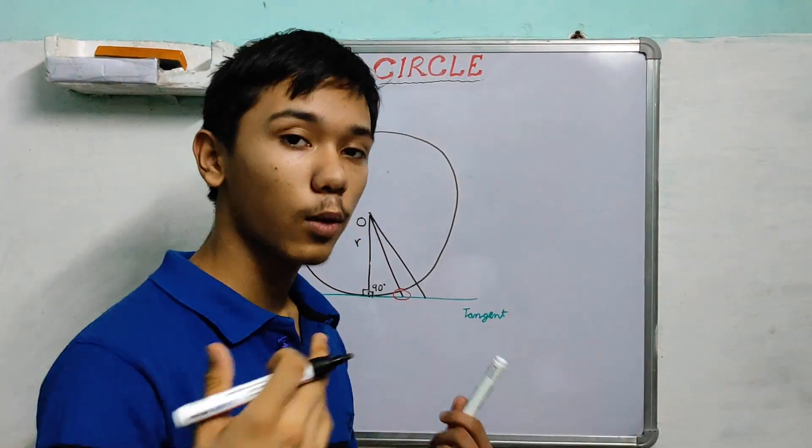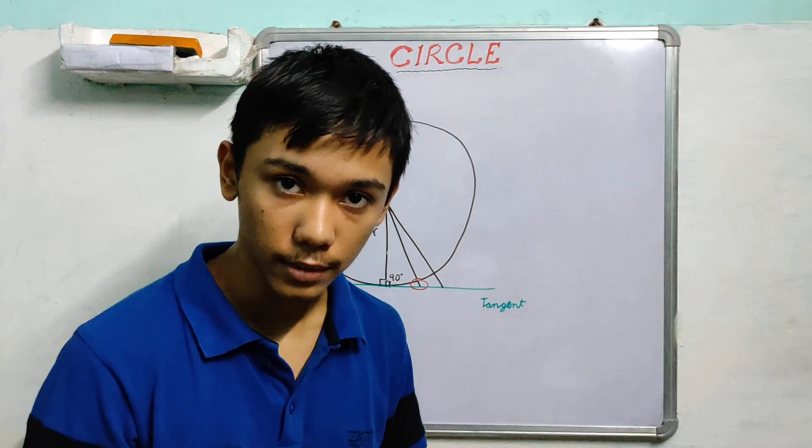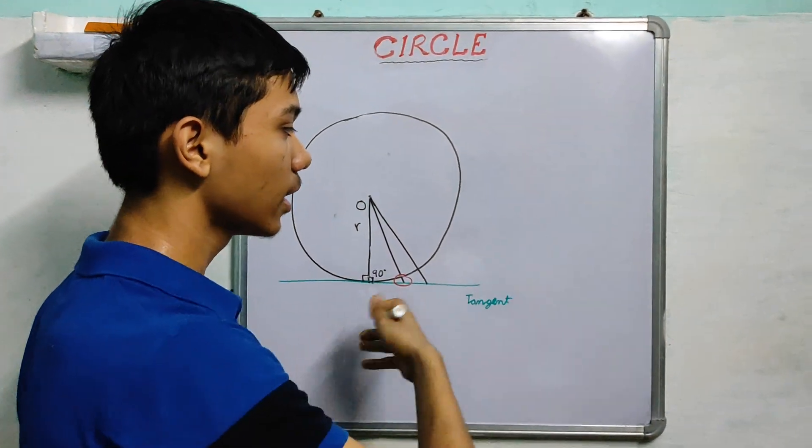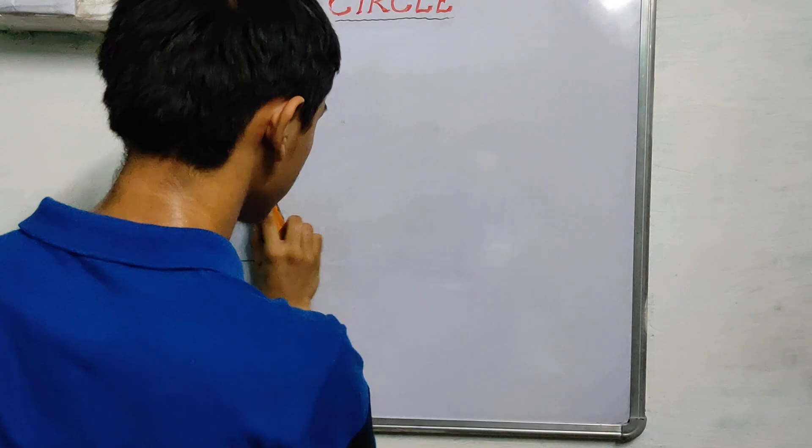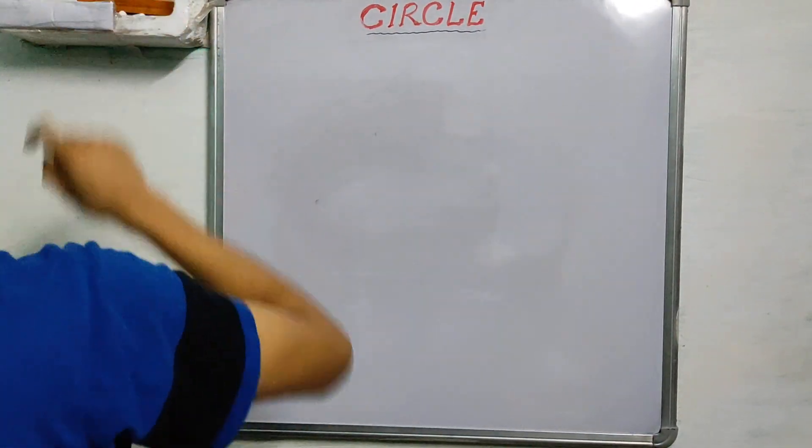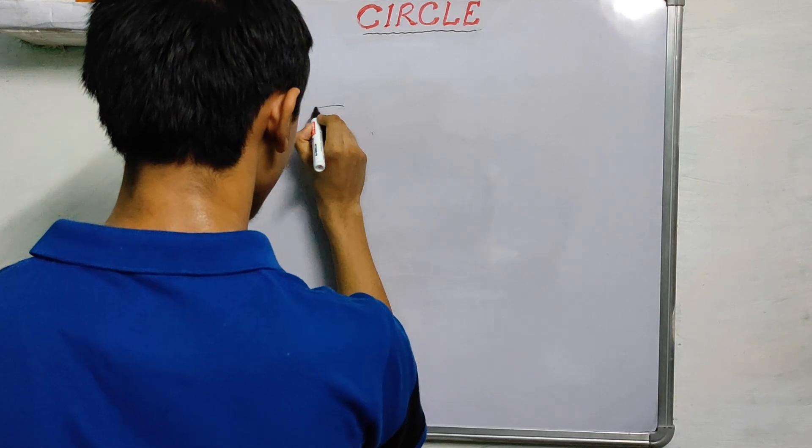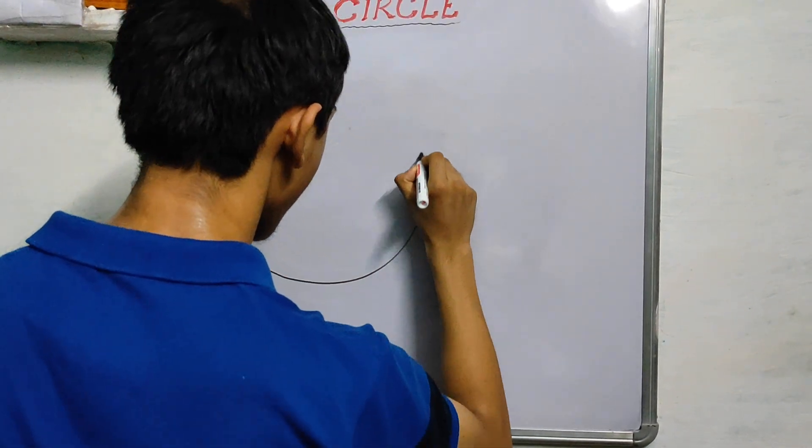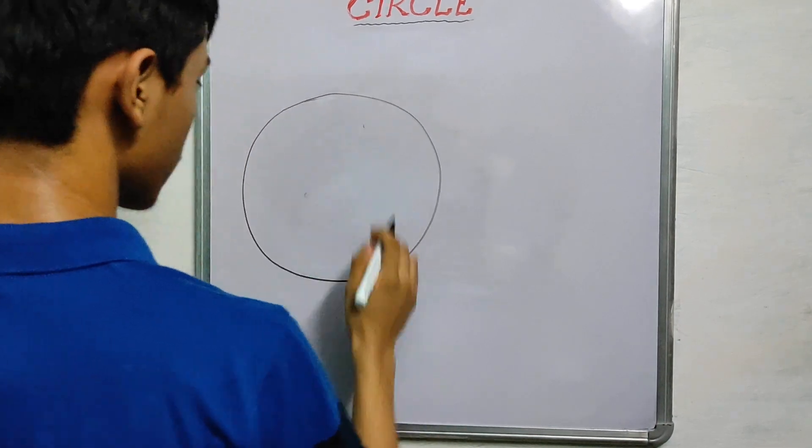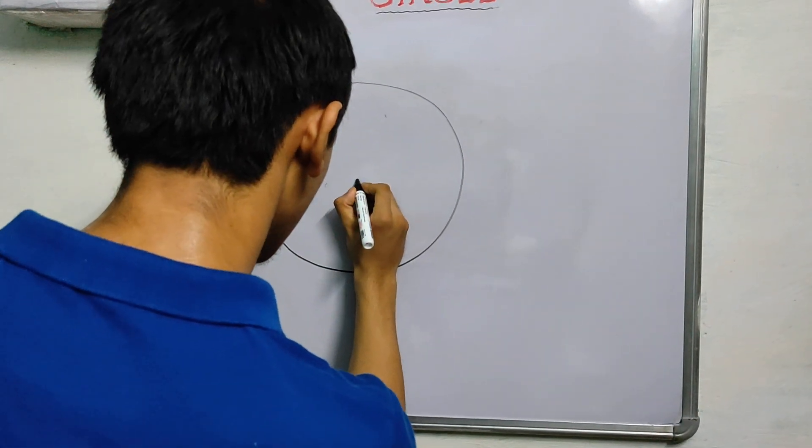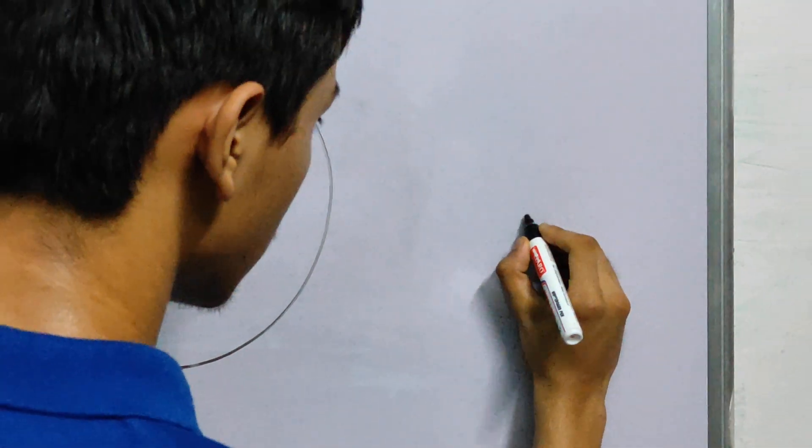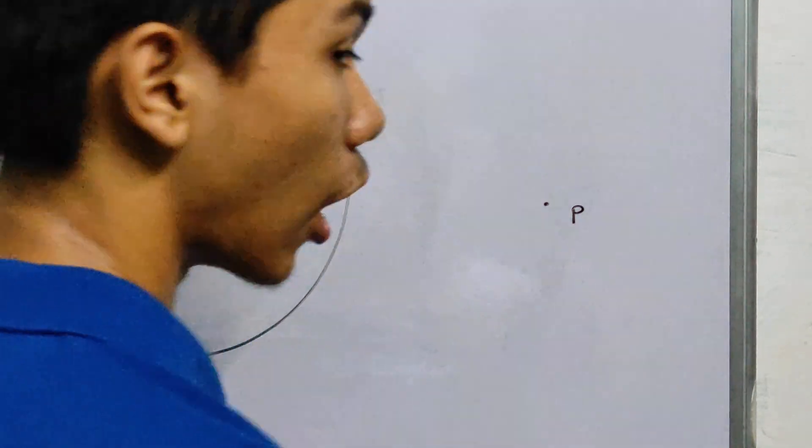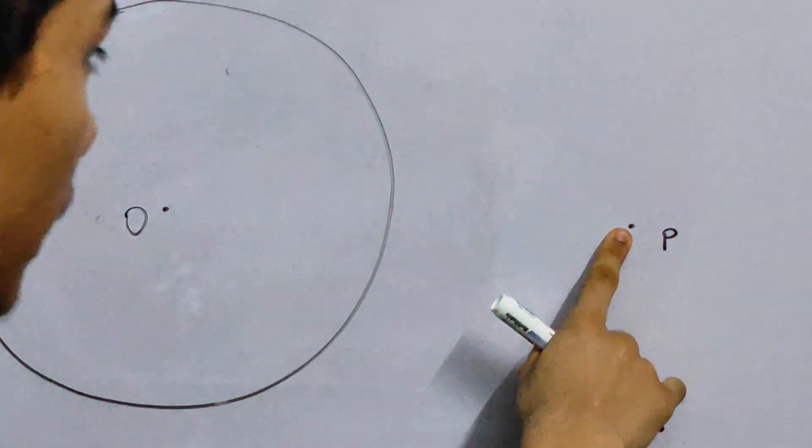Now, what we are interested in is tangents from a point. So for example, you have a point here, and then you draw tangents. I have a circle, let the centre be O, and we draw tangents from a point, let us call this point P. Now, how many tangents can we draw from P to the circle?